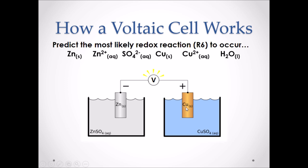In the other beaker, we have copper solid and copper sulfate, which we list as Cu²⁺ and SO₄²⁻. And don't forget — always include water when we have solutions. Now we have to predict the strongest oxidizing agent and strongest reducing agent using the Chemistry 30 data booklet. Our strongest oxidizing agent is Cu²⁺, and our strongest reducing agent is zinc solid.